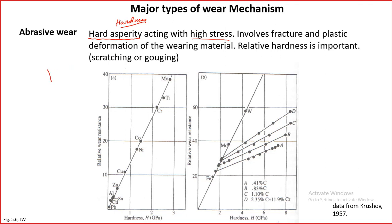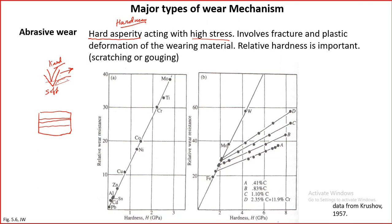Consider a hard surface with some roughness — if this is one asperity and the other surface is soft, the hard asperity will easily dig into the soft material. As there is relative motion, it will cause plastic deformation and material removal. On the surface you will find very long scratches going from one end to another, which can be quite deep or sometimes shallow. Abrasive marks can also be seen.